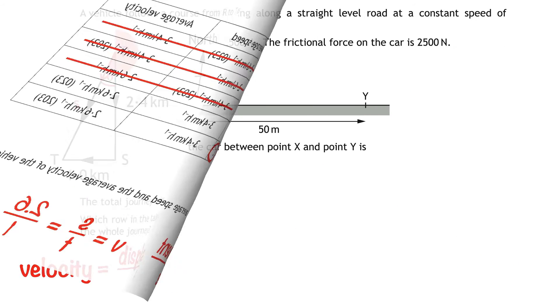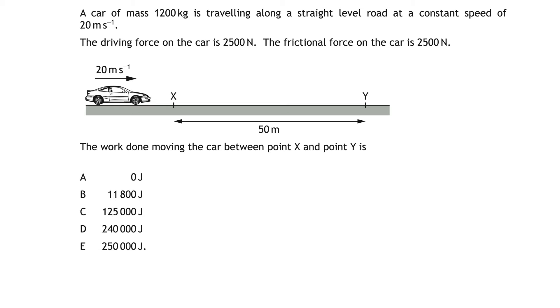Next question. A car of mass 1200 kilograms is travelling along a straight level road at a constant speed of 20 metres per second. The driving force on the car is 2500 newtons. The frictional force on the car is 2500 newtons. The work done moving the car between point x and point y is, and then we have our usual suspects as answers. But only one of them is right.